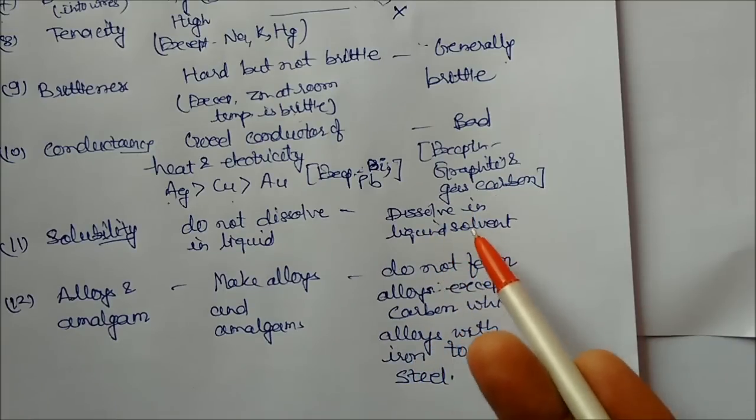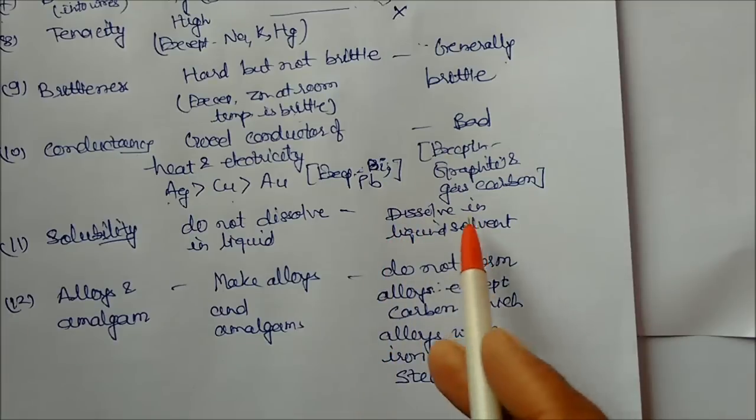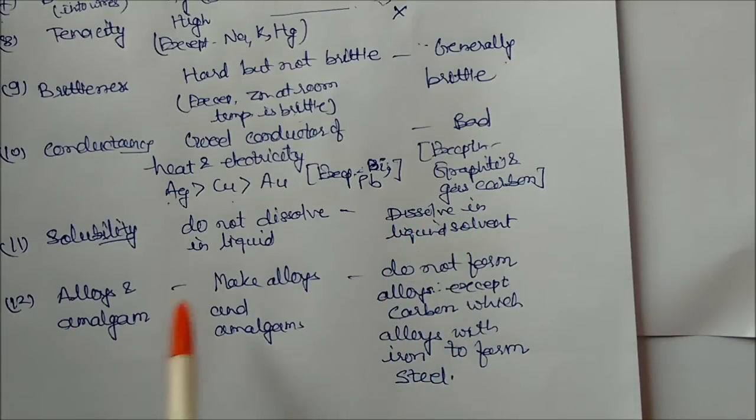Alloys and amalgams: you can make alloys and amalgams with metals. Nonmetals do not form alloys except carbon, which forms steel with iron.